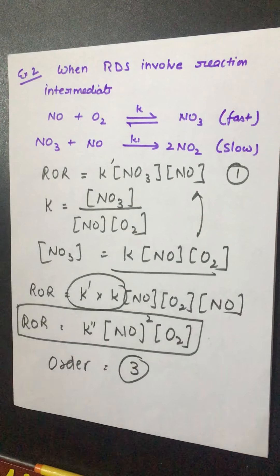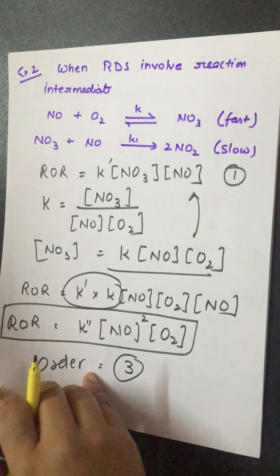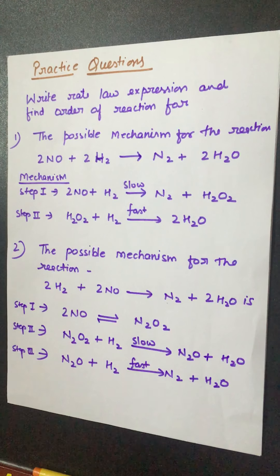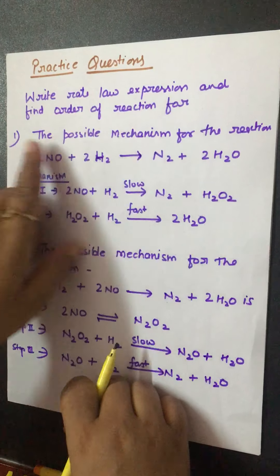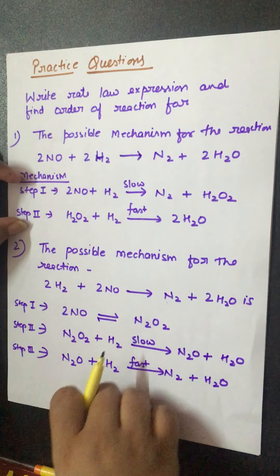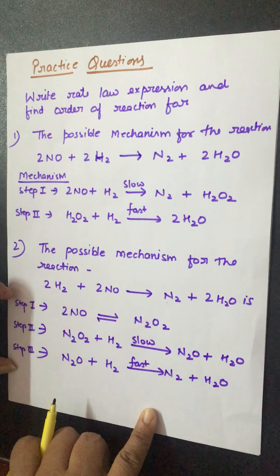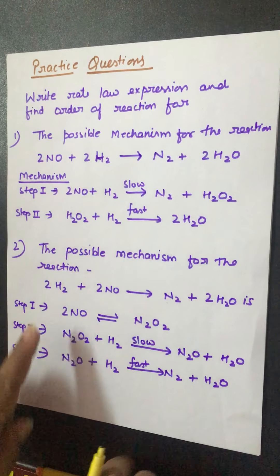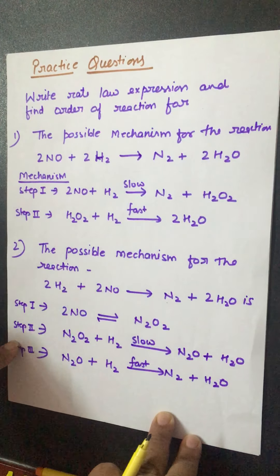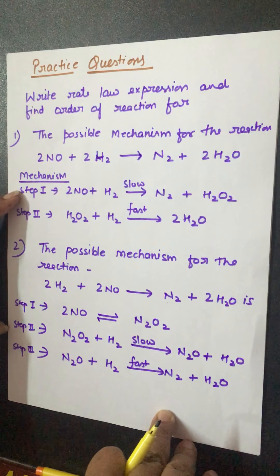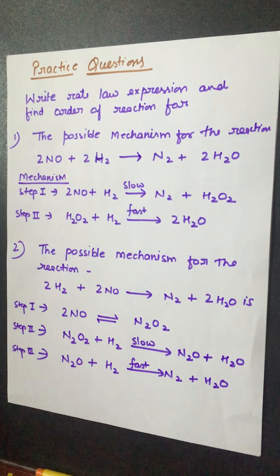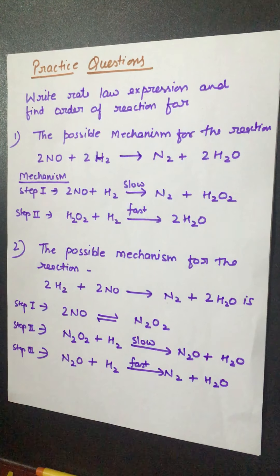If you understand all these topics, there are two practice problems based on finding the order of reaction for complex reactions. Write the RLE and find the order of reaction for the given mechanisms — in the first, the first step is slow, and in the second, the second step is slow. Try these problems and message me your answers. In the next video, we will talk about zero order reactions. Until then, goodbye.